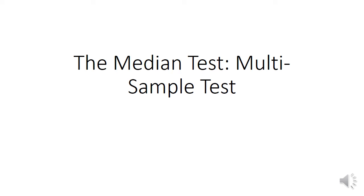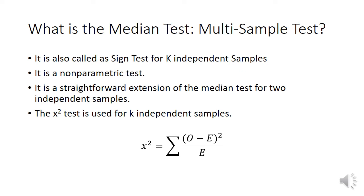Good morning. The topic that I'm going to discuss today is the median test or the multi-sample test. It is also called a sign test for K-independent samples. It is a non-parametric test and a straightforward extension of the median test for two independent samples. The chi-square test is used for K-independent samples, and the formula we are going to use is: chi-square equals the summation of the observed minus expected values squared, divided by the expected values.